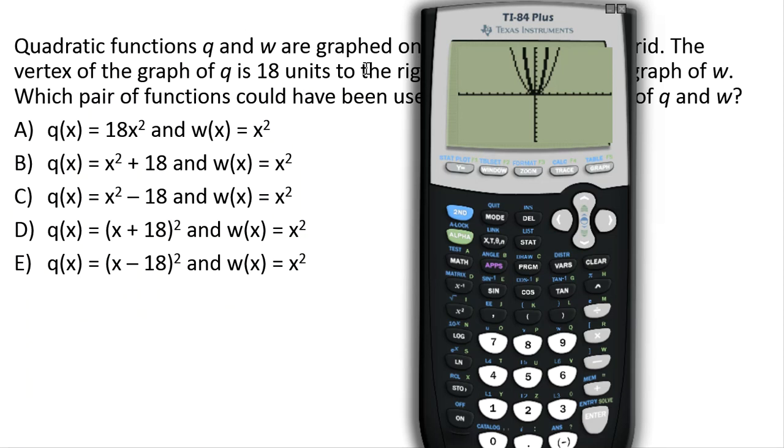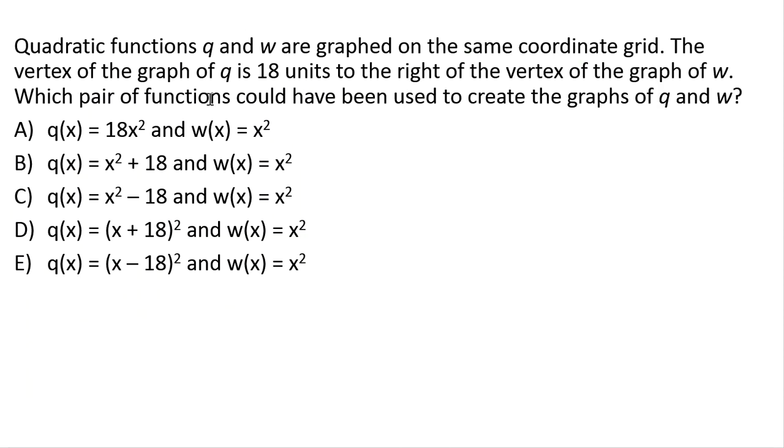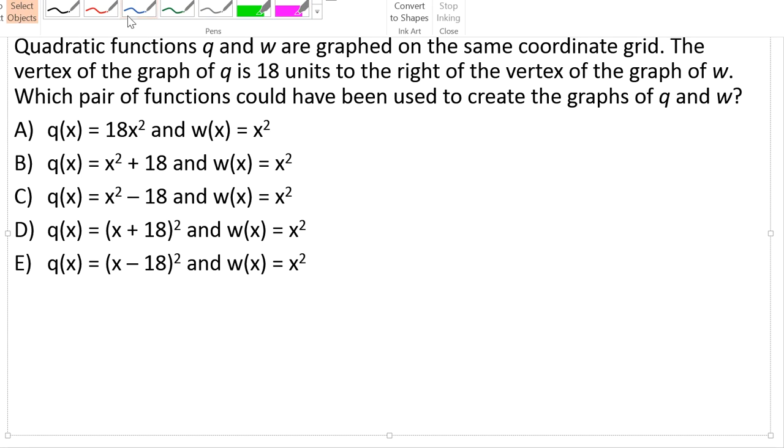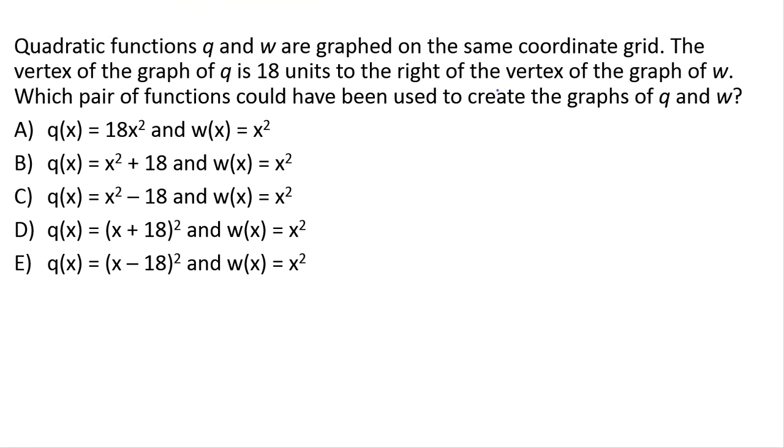Let's take a look at our second problem of the day. This problem says we have quadratic functions q and w, and they're going to be graphed on the same coordinate grid. So we're going to put them on the same graph and compare them. The vertex, remember the vertex is the point. So if you draw a parabola, the tip of that parabola, the turning point, is called the vertex.